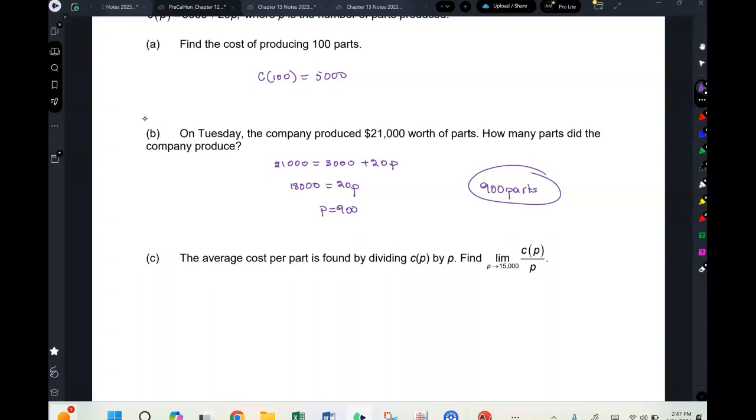So sometimes in calculus, even in AP calculus, you'll have some questions that are really just as basic as this. But it's part of the setup to a bigger thing. Now the average cost per part is found by dividing the cost by p.